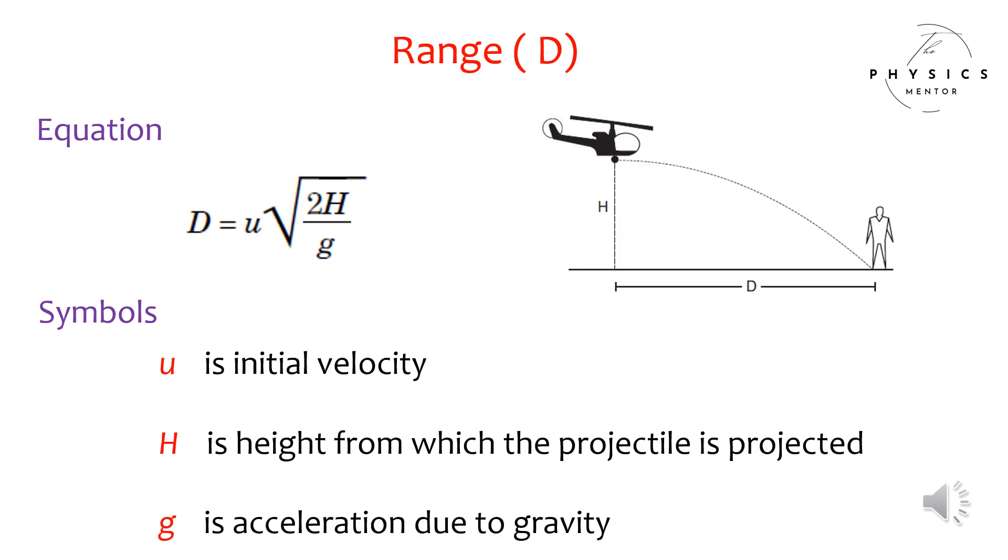Range D: Equation - Range equals u times square root of 2H divided by g. Symbols: u is initial velocity, H is height from which the projectile is projected, g is acceleration due to gravity.